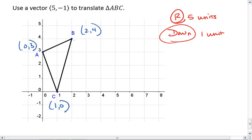I'm going to take each point, go 5 to the right - 2, 3, 4, 5 - and 1 down. So this is my point B prime at (7, 3).